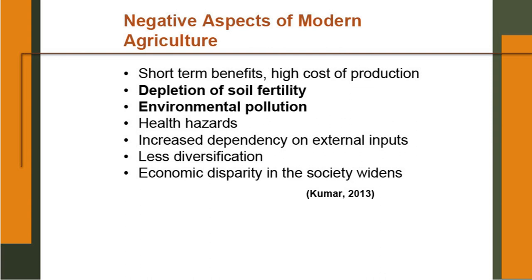Let us see some negative aspects of modern agriculture — that is why we say it is not sustainable agriculture. Negative aspects are short-term benefits and high cost of production; year by year the cost of production is increasing. Depletion of soil fertility — many times farmers are over-exploiting the fertility; they are not adding nutrients from outside, therefore nutrients are removed from the soil by the crop. They may be lost by different mechanisms like leaching or volatilization. Whatever is removed and lost from the soil, the same quantity is not returned back — it is nutrient depletion or nutrient mining. Our soils are getting deficient in many micronutrients, macronutrients and so forth — this is really a serious matter of concern.